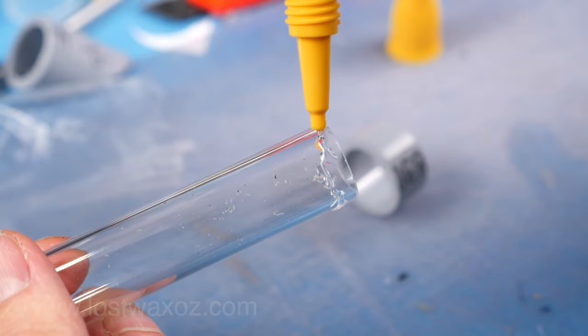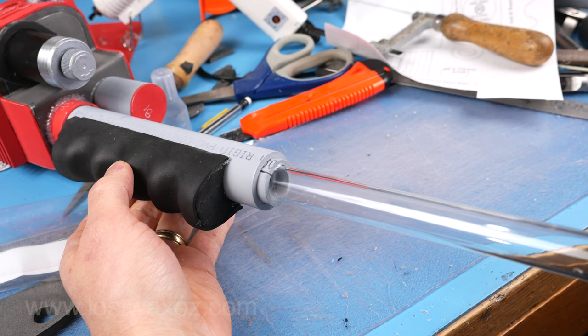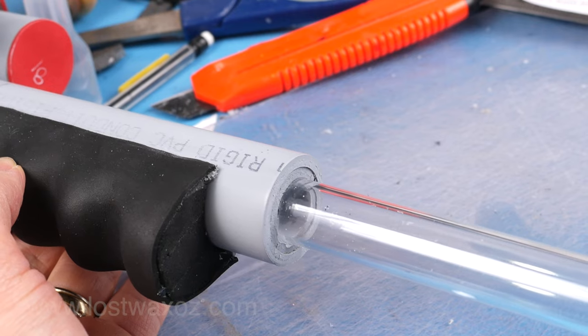Apply some super glue to the end of the acrylic pipe and slide the ring on so it glues into place. Now give it a test and make sure it fits in the barrel. Then pull it out again.